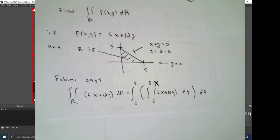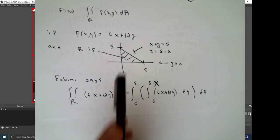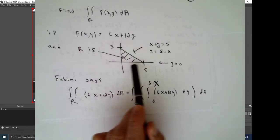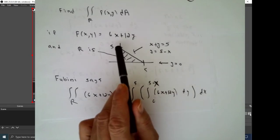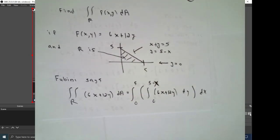So as an example, let's calculate the double integral over region R function f of x and y with respect to area, where to be specific, f of x and y is 6x plus 12y, and the region R is a triangle that lies in the xy plane in the first quadrant, bounded by the y axis, the x axis, and the straight line x plus y equals 5, which by the way tells you that y is 5 minus x.